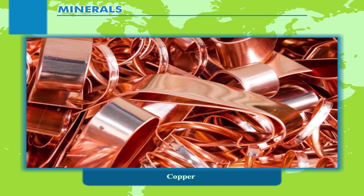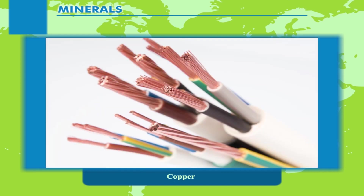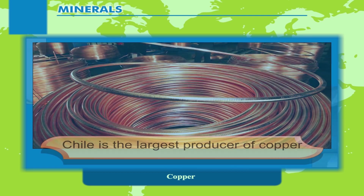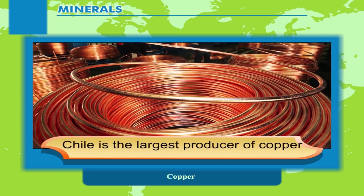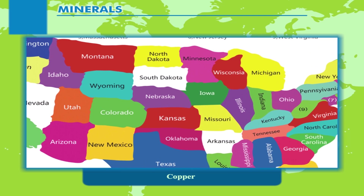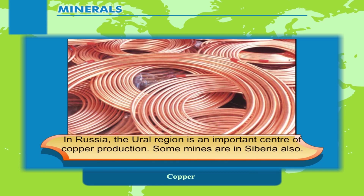Copper is a very important metal because of its high conductivity. It is largely used in the electrical industry for transmission of electricity and for making electrical appliances. Chile is the largest producer of copper. The USA is another important producer of copper with mining areas in the states of Arizona, Utah, and Montana. In Russia, the Ural region is an important centre of copper production.